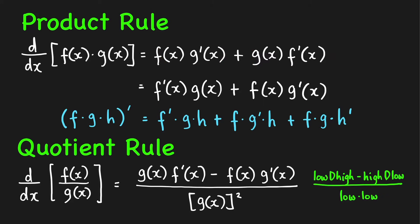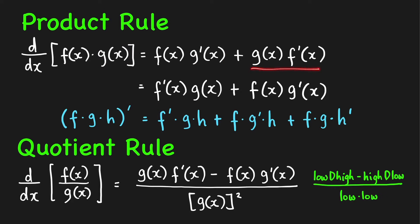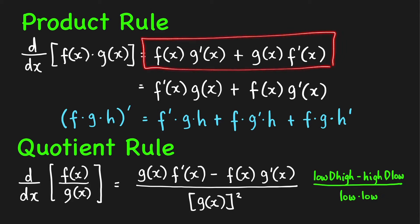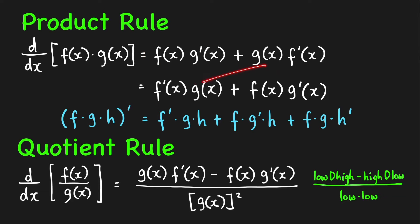For example, we take the derivative of g first, so you have g prime of x, and then in the second product we take the derivative of the first factor. We can also write this sum by interchanging the order of these two terms.